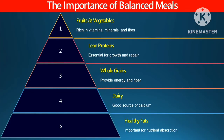The following are the importance of a balanced meal. The first one is fruits and vegetables, which are rich in vitamins, minerals, and fiber. The second one is lean protein, which is essential for growth and repair. The third one is whole grains, which provide energy and fiber. The fourth one is dairy, which is a good source of calcium. And the last one is healthy fats, which are important for nutrient absorption.